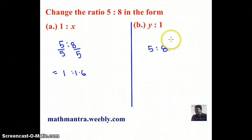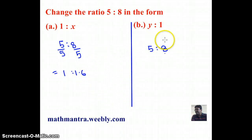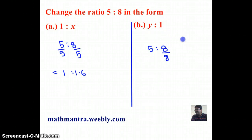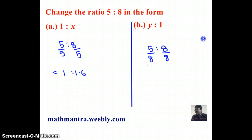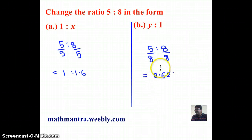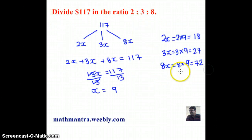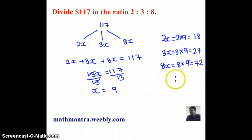Now I can find out the value of each part because I know the value of x. The first part is 2x, which means 2 times 9, which equals 18. The second part is 3x, which is 3 times 9, which is 27. The third part is 8x, which is 72. So this is how $117 is divided in the ratio 2 is to 3 is to 8.